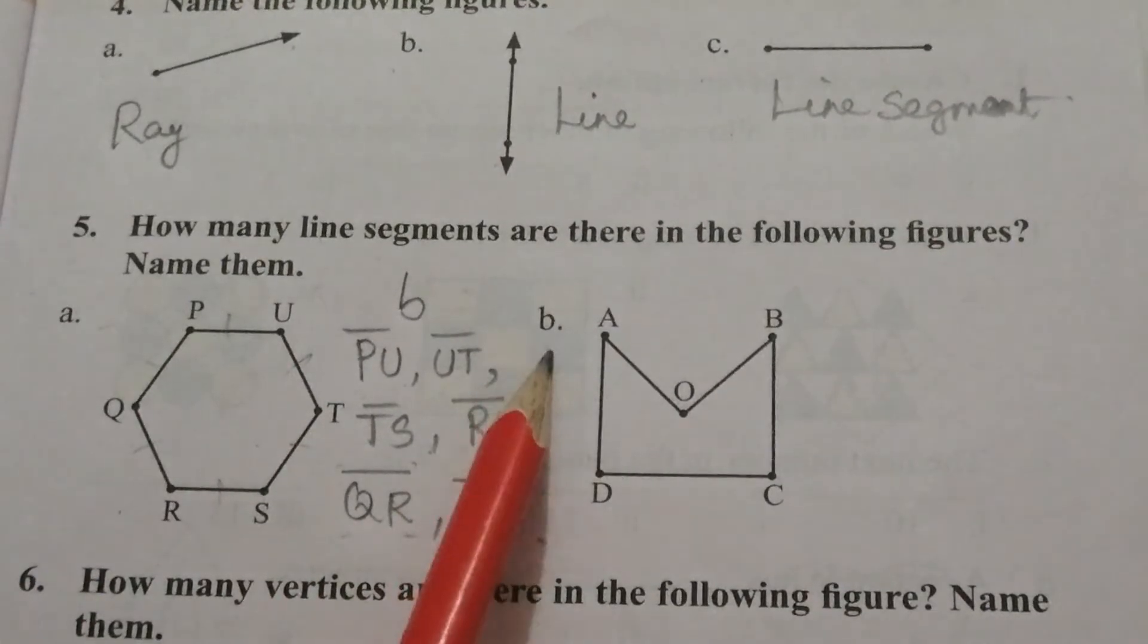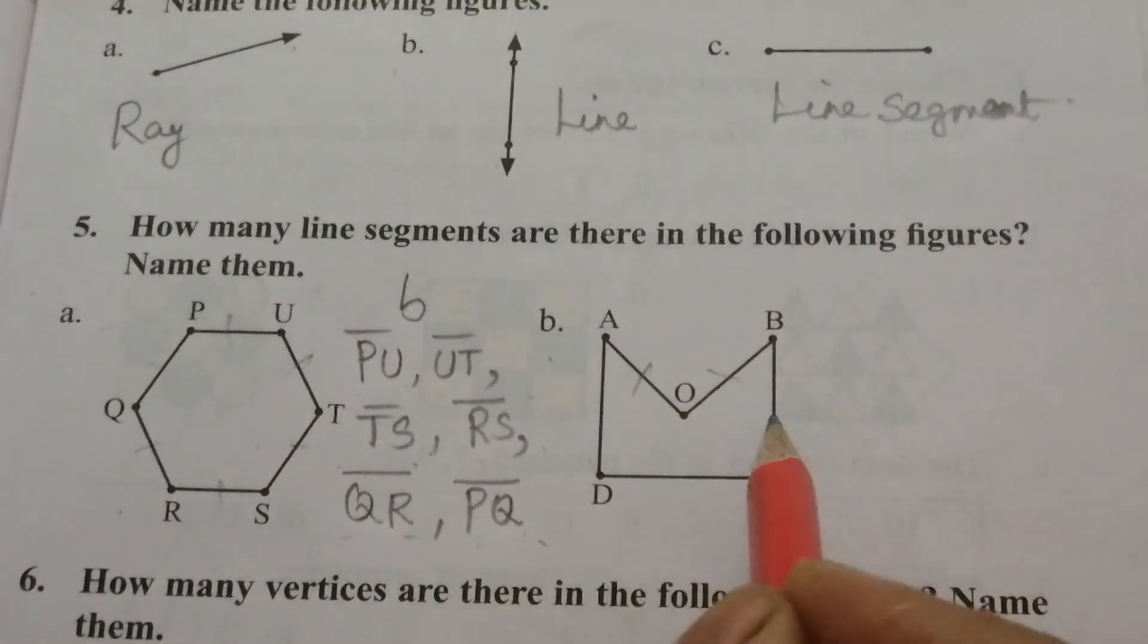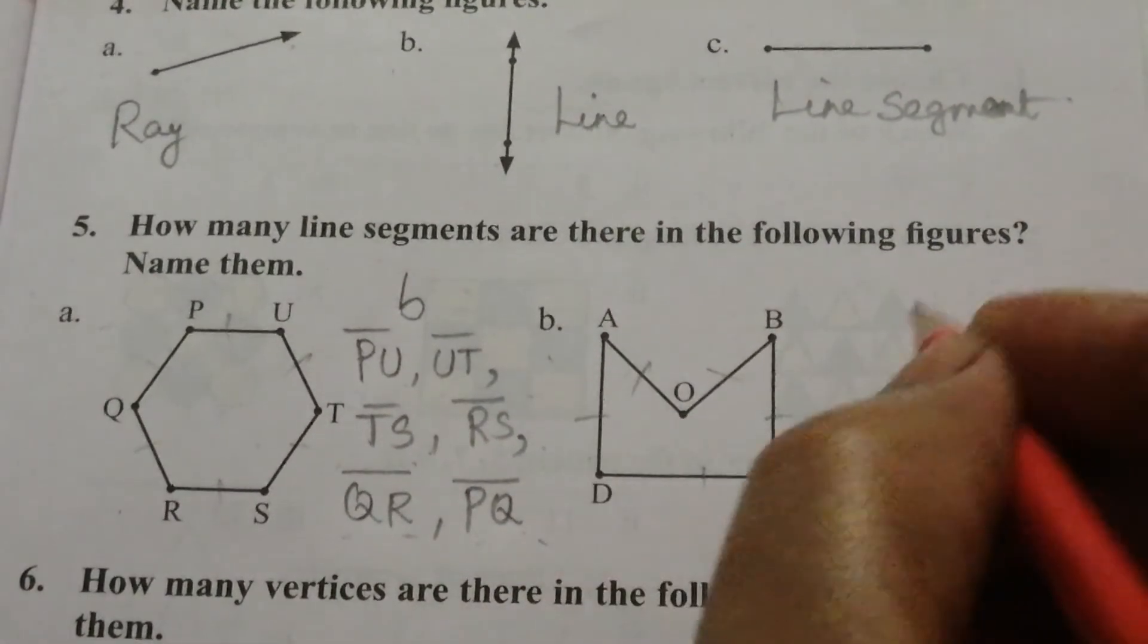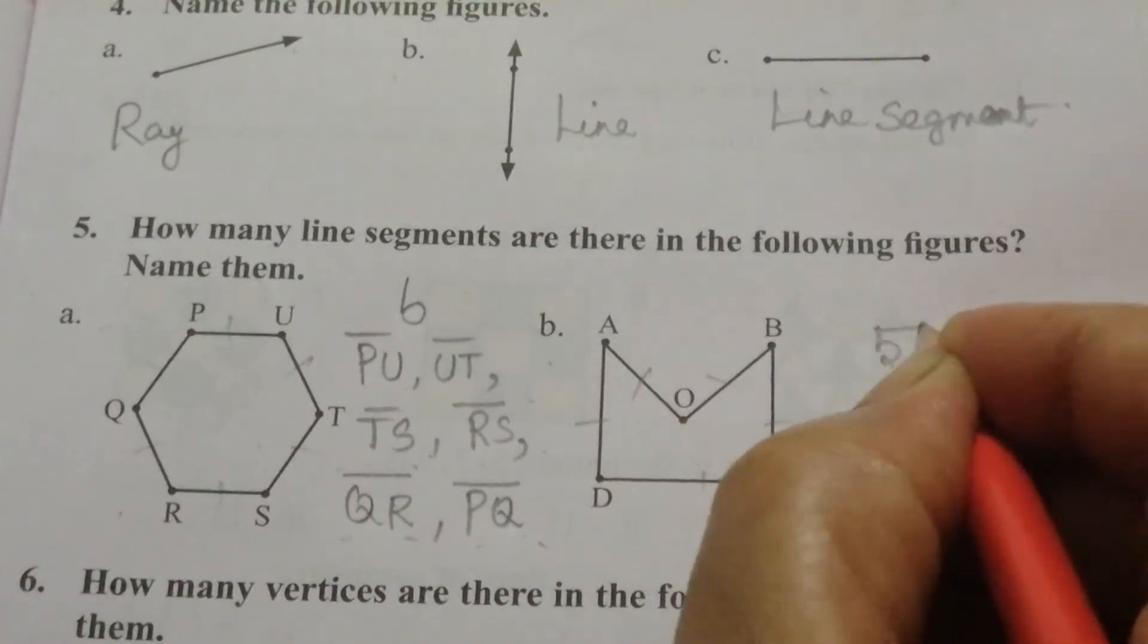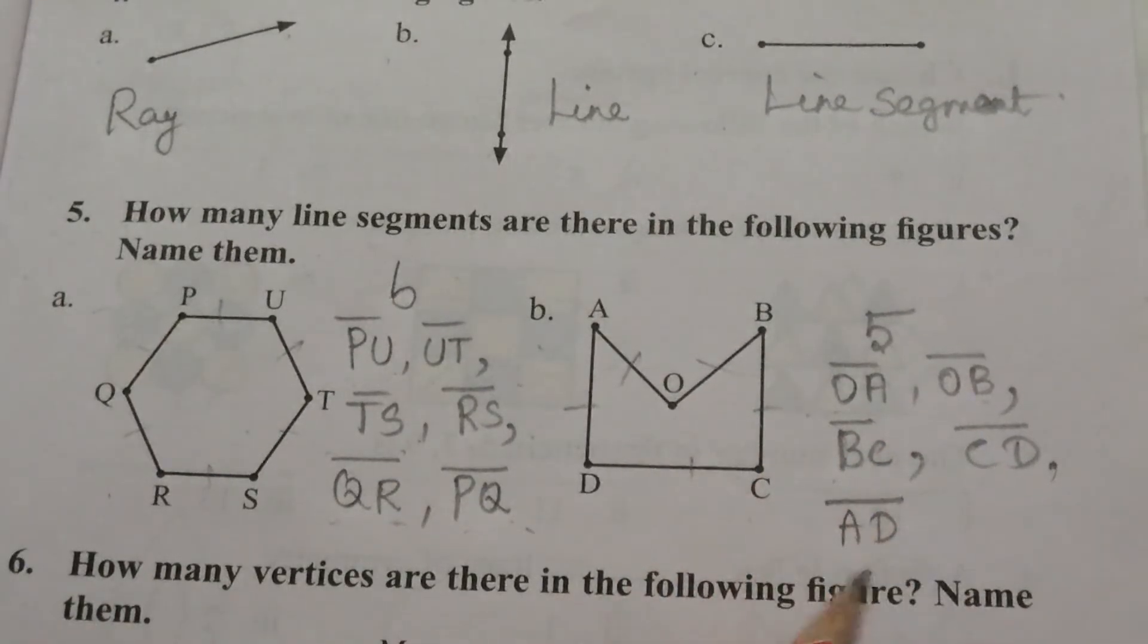And for B, how many line segments are here? 1, 2, 3, 4, 5. So, totally five line segments. The five line segments are OA, OB, BC, CD, and AD.